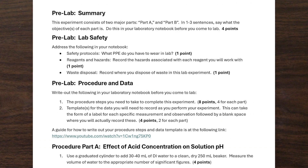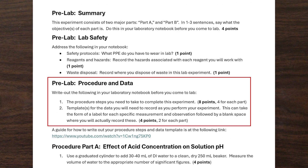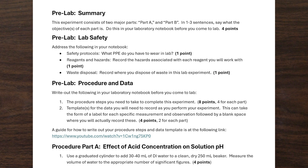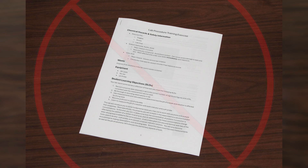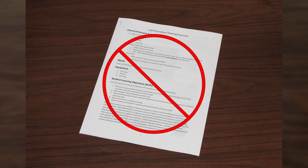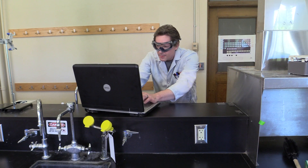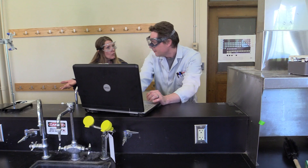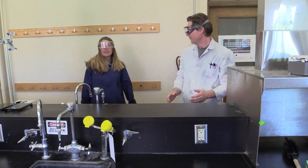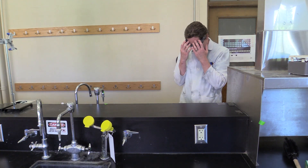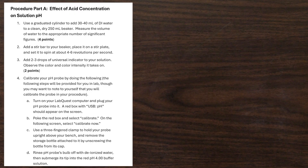For the third part of the pre-lab, you will write out the procedure you're going to follow and make a template, or a list, of the data you're going to need to record. See, you're not allowed to bring a printed copy of the procedure with you into lab, and you can't have your phone or laptop out to look it up either. So the only procedure information you're going to have in lab is whatever you wrote down for your pre-lab.